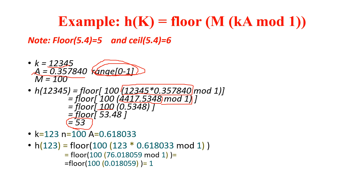Same process for another example with keys 1, 2, 3. First step: select A value in the range 0 to 1 — I selected 0.61. Second: multiply key × A. Third: mod with 1. Fourth: multiply with the table size. Fifth: take the floor value. After the floor, I get 1. That means keys 1, 2, 3 are going to store at index 1, if my table size is 100.